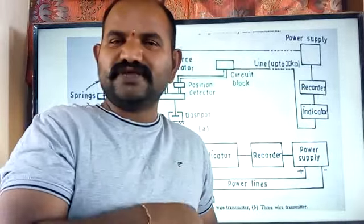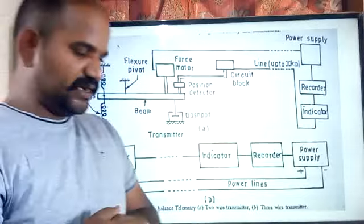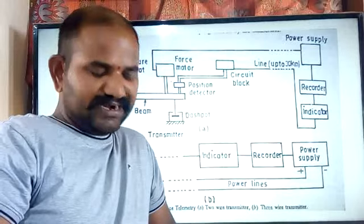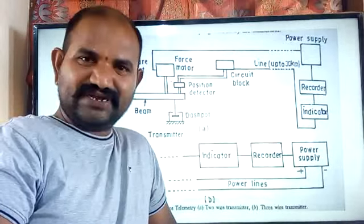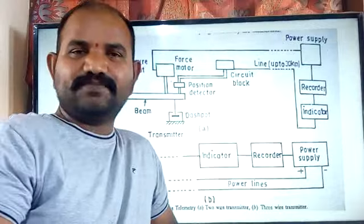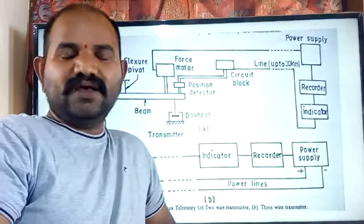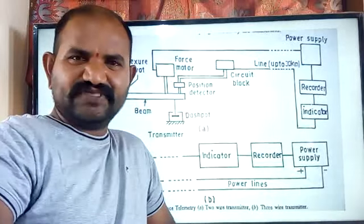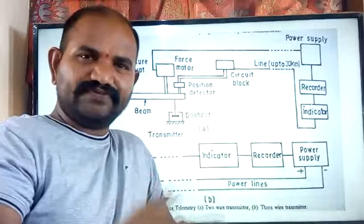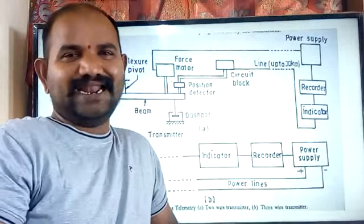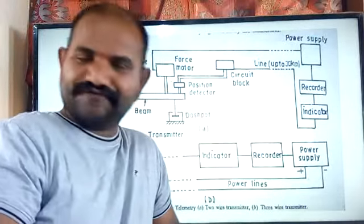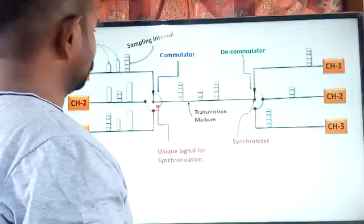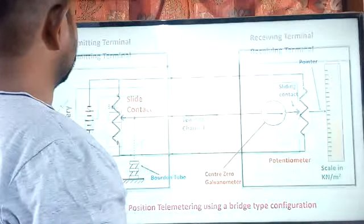In the landline telemetry system, there is a physical path between the transmitter and receiver — either a telephone cable or a coaxial cable. Based on this, telemetry systems are of two types: landline telemetry system and radio frequency telemetry system. This concludes the landline telemetry system.